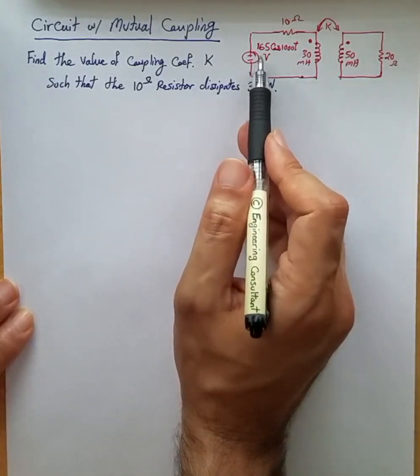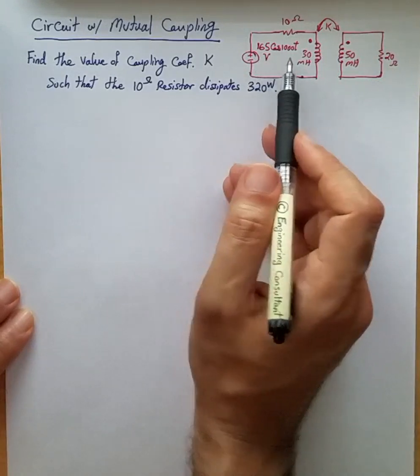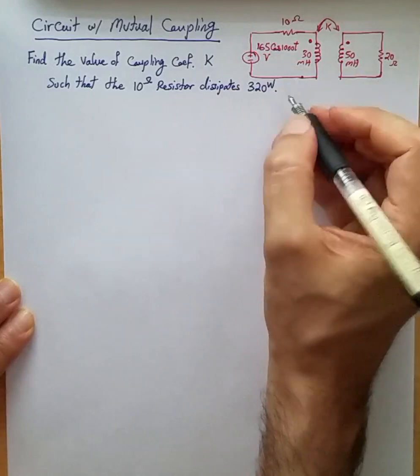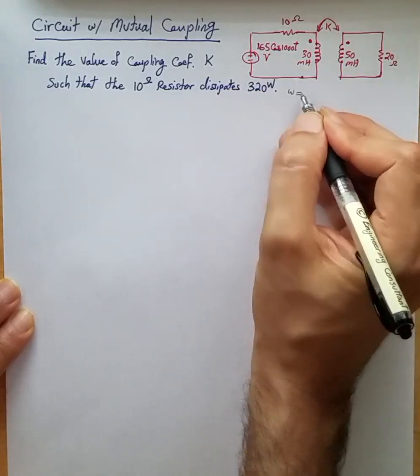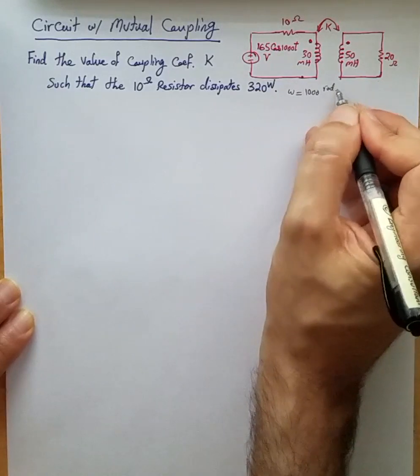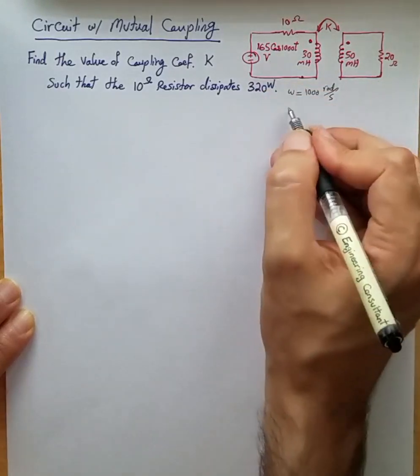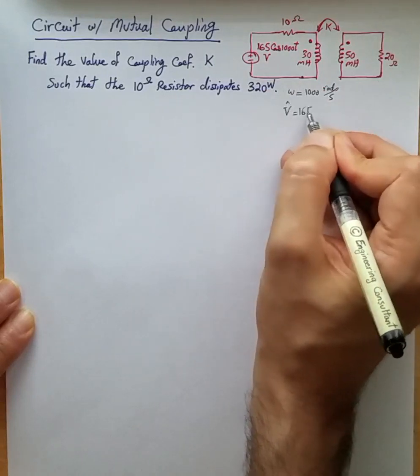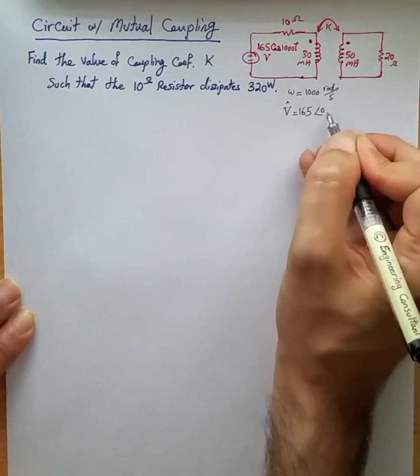A sinusoidal voltage source of 165 times cosine 1000t here in the circuit. So obviously we can see that omega is 1000 radians per second, and we can rewrite the voltage source in the form of phasor 165 phase zero volts.